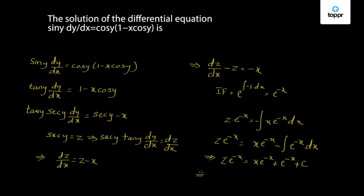Substituting the value of z as secant y, we get secant y times e raised to minus x equals x plus 1 plus c. Multiplying both sides by e raised to x, we get secant y equals x plus 1 plus c times e raised to x. This is the solution for the given differential equation.